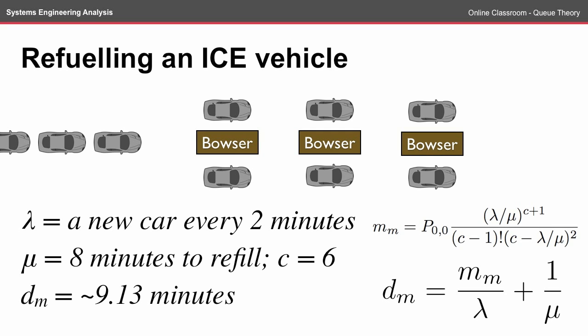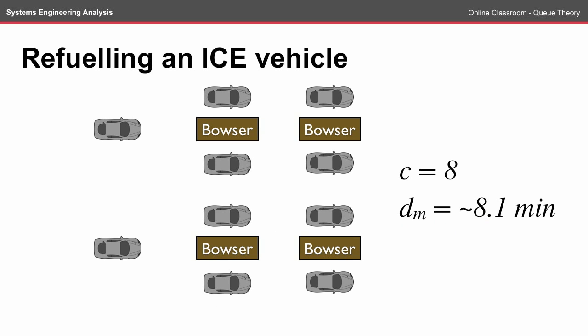So, doing a lot of arithmetic or using a queue theory calculator, with 6 channels, we find that the total time a car is going to be in the system, including the waiting time before using a Bowser, is approximately 9.1 minutes. If the service station increases this to 8 Bowsers, then the time is approximately 8.1 minutes.